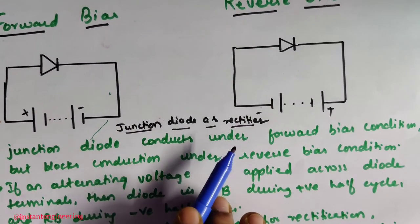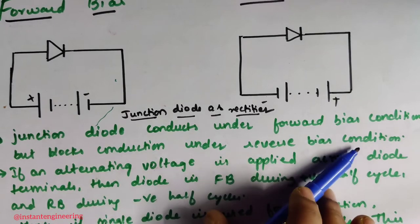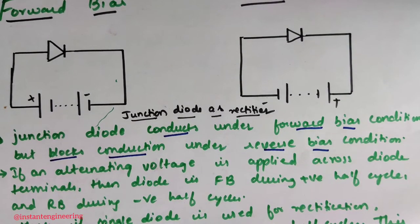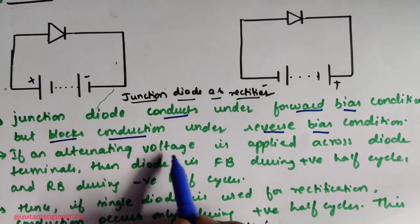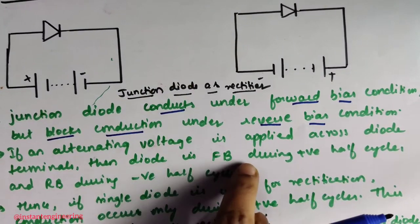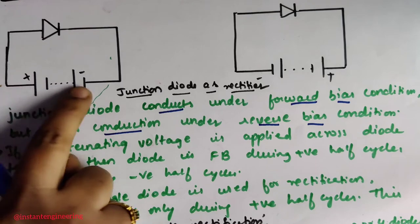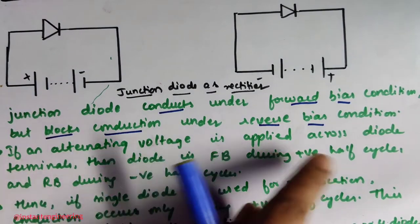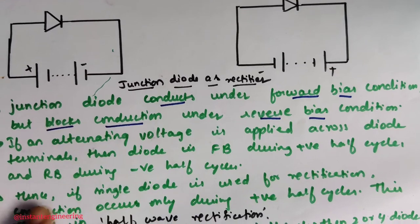The junction diode acts as a rectifier because it conducts under forward bias but blocks conduction under reverse bias. Simply remember: a diode will conduct only in forward bias and will block conduction in reverse bias. If we apply an alternating voltage across the diode terminals, the diode is forward biased during positive half cycles and reverse biased during negative half cycles — so conduction takes place only in the positive half cycles.